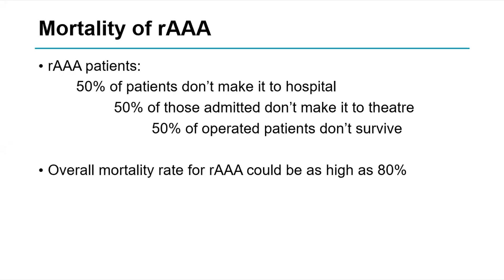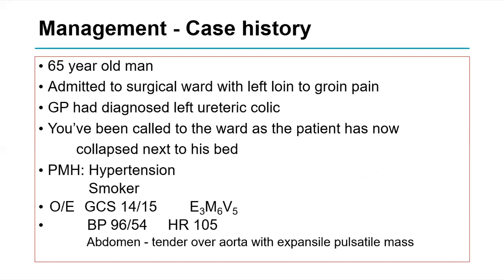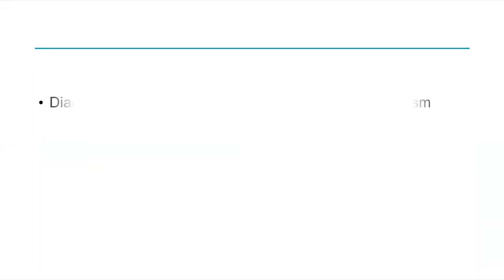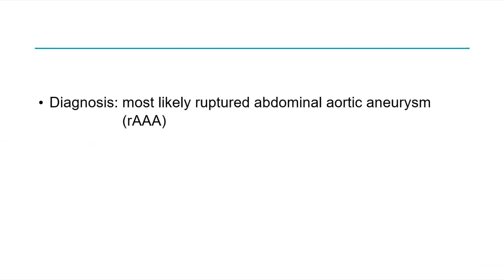Regarding mortality: traditionally, 50% of patients with ruptured AAA don't reach hospital; of those who do, 50% don't make it to theatre; and of those who reach theatre, 50% do not survive. So overall mortality can be as high as 80%. Now the case: a 65-year-old man admitted with left loin-to-groin pain, GP diagnosed ureteric colic. First week on call as a surgical F1, called to the ward as the patient has collapsed. Past history of hypertension and smoking. On examination: GCS 14, BP 96/54, HR 105 — signs of shock — with tenderness overlying a pulsatile mass.